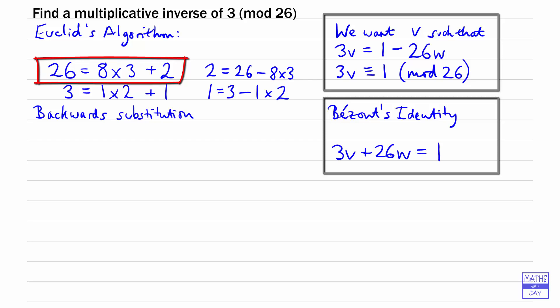I'm going to write down the remainder here in the same way: 2 is 26 minus 8 times 3. We're going to use that to write 1 in terms of 26 and 3. So we've got 1 is 3 minus 1 times 2.